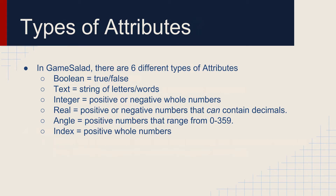So those are what attributes are. Let's talk about the different types of attributes inside of GameSalad. There are a total of six different types of attributes available to use inside of GameSalad. We have the Boolean attribute, which can either equal true or false — it can only equal true or false. So you may want to use a Boolean attribute to trigger some GameOver logic when it's true.